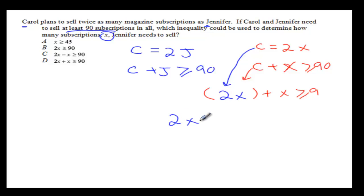So the answer is 2X plus X greater than or equals to 90. And this is choice D.